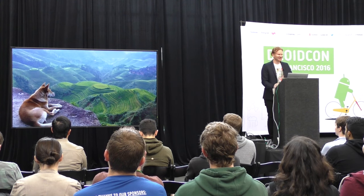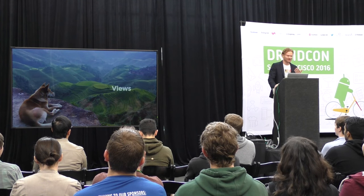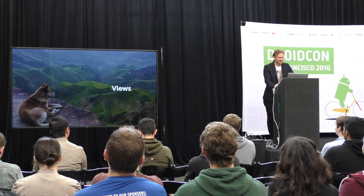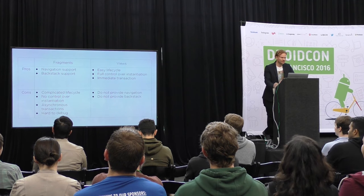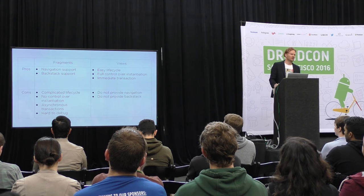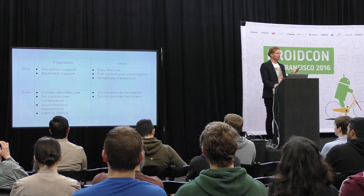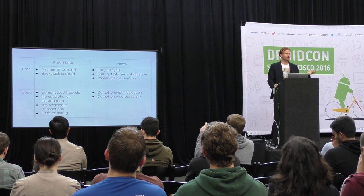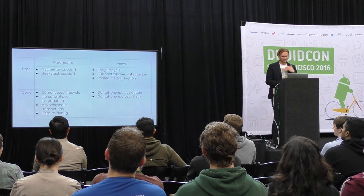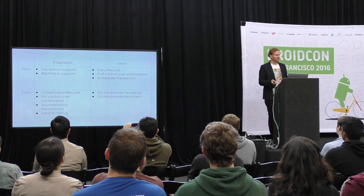We started our search, and after a while we got to the idea that the solution was there from the beginning — you can just use plain Android views that have been there since day one. Views have a much simpler lifecycle: all you care about is if the view is attached to the window and if it's detached from the window. You have full control over the instantiation process — you inflate the view and immediately add it to the view hierarchy. No asynchronous magic of Fragment transactions. But the only missing part is navigation and backstack.